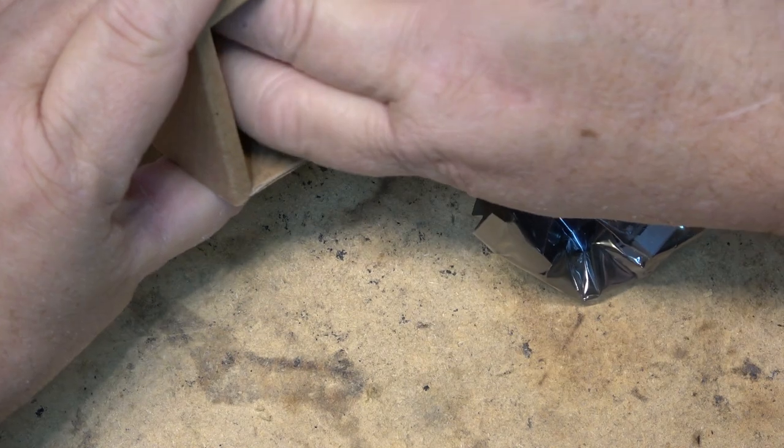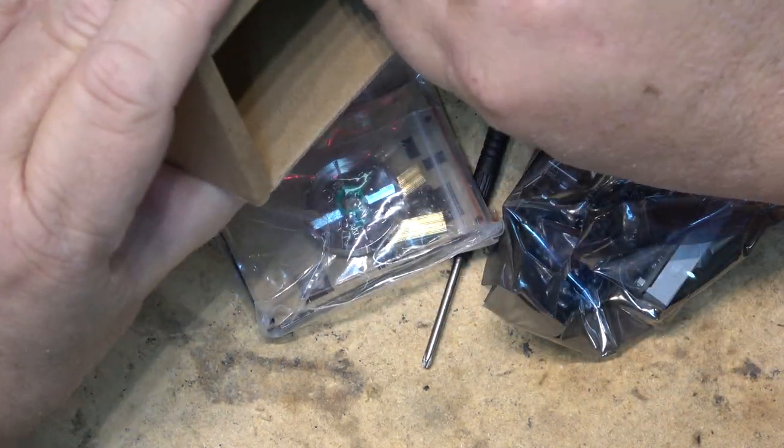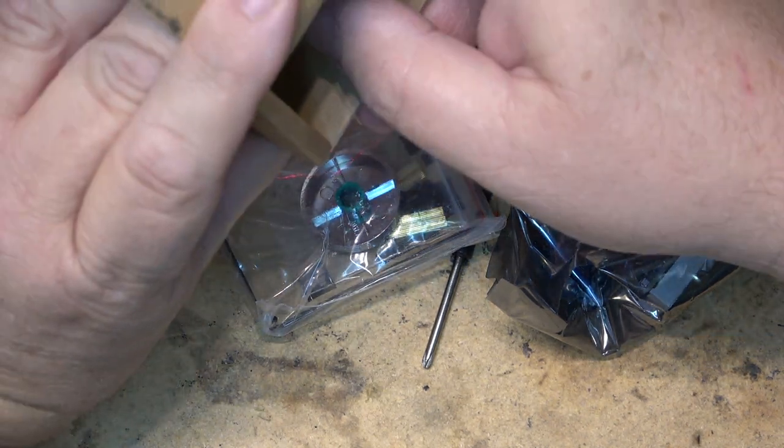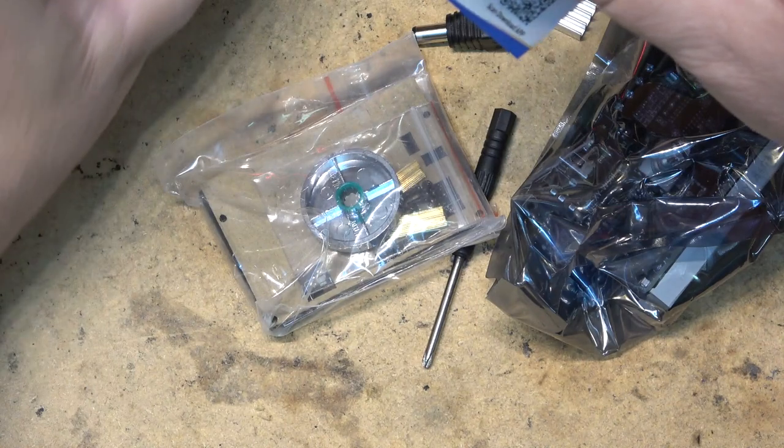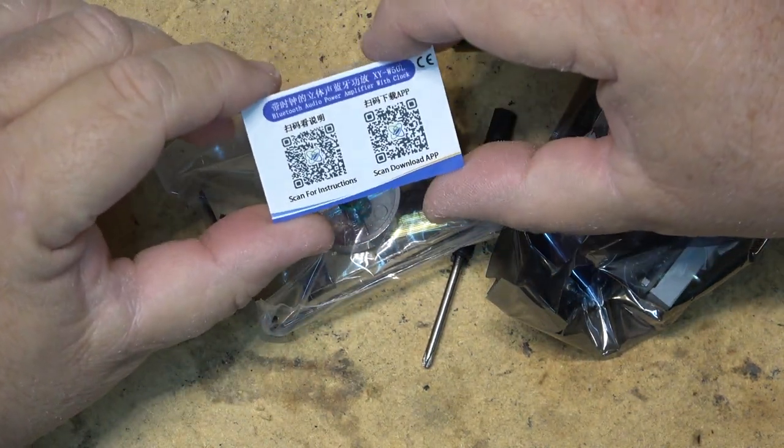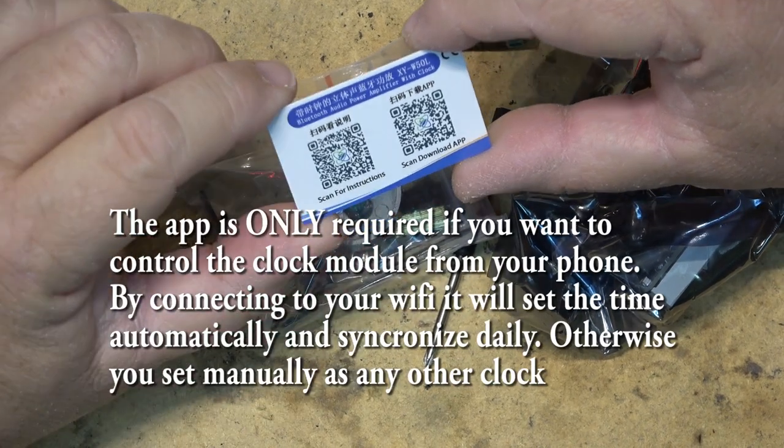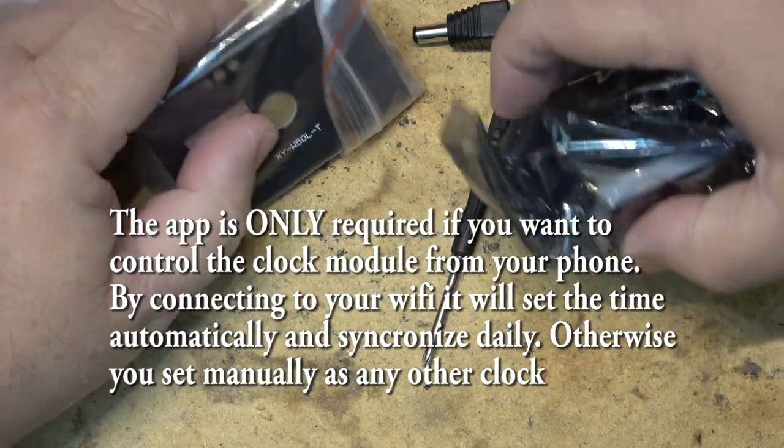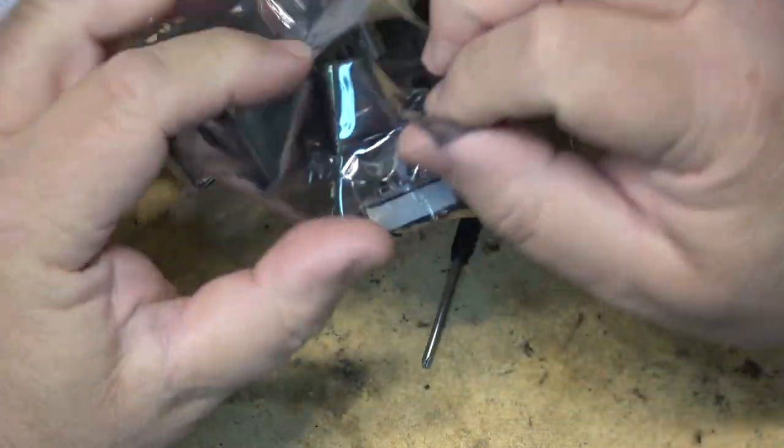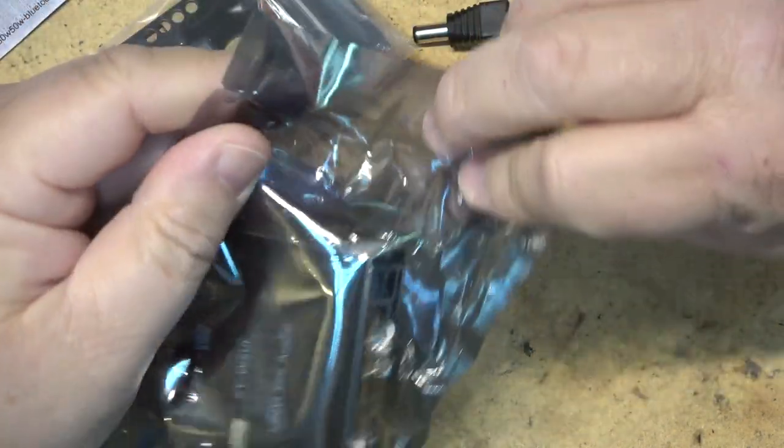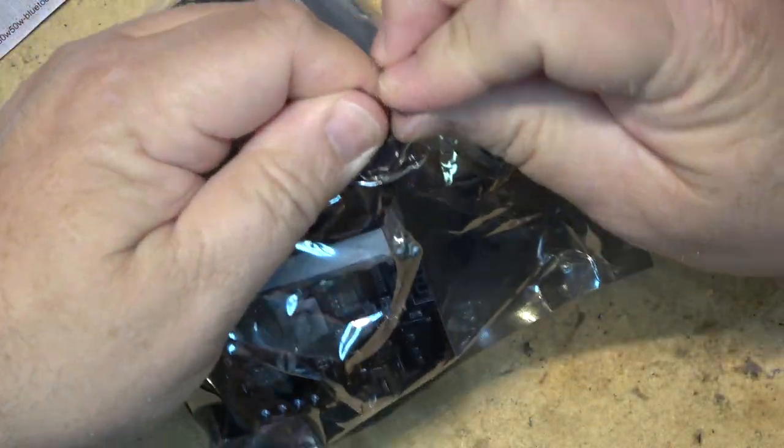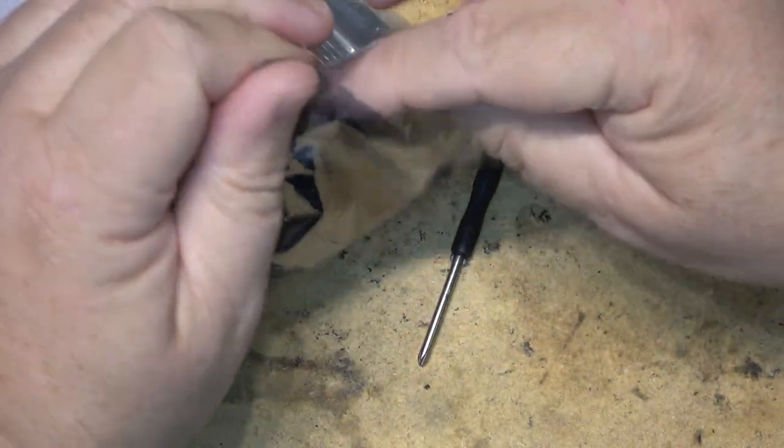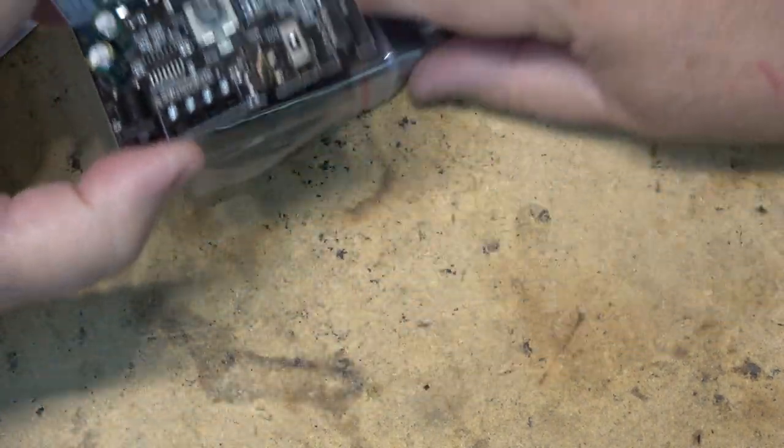I have the GY19622, also known as the XYW50L. It comes with some hardware, a little screwdriver, a heat sink, a QR code so you can get the app, and instructions. Let me open it up. It comes in an anti-static bag and here's this little module, it's still factory sealed.